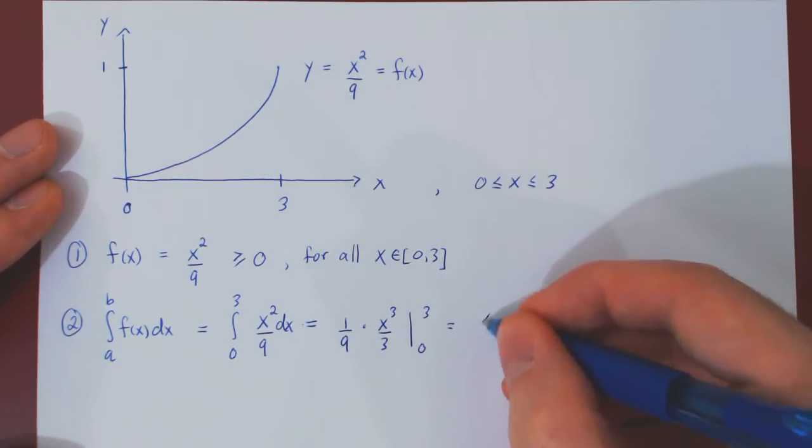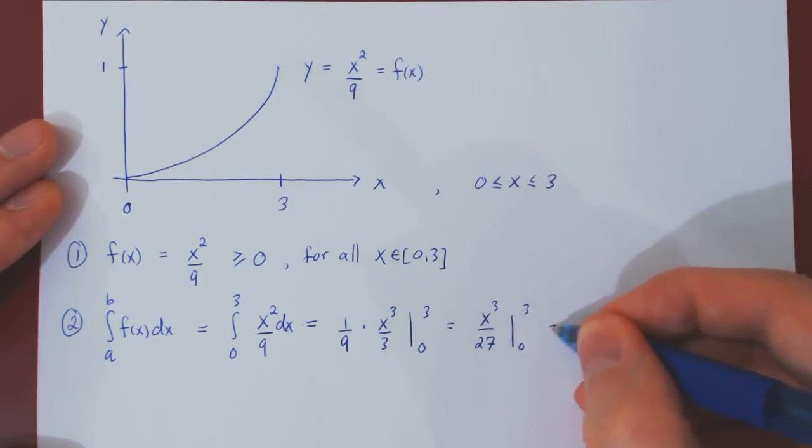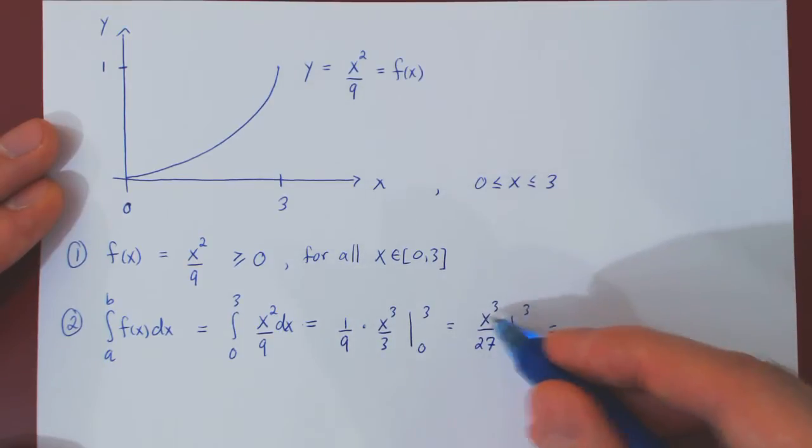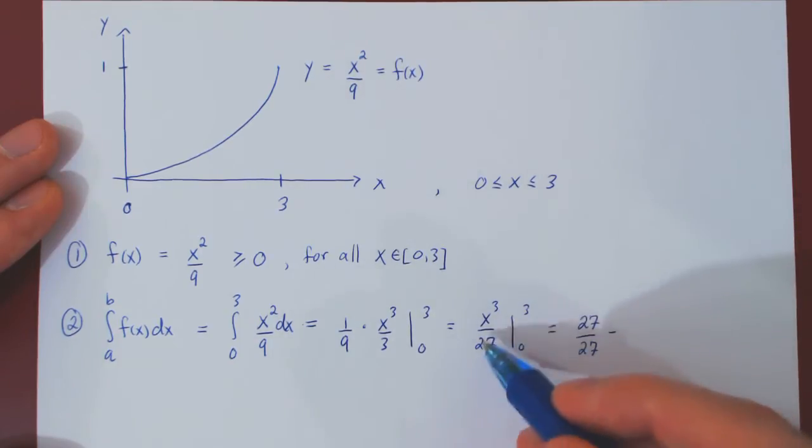We can simplify this as x cubed over 27. 3 times 9 is 27, from 0 to 3. So at 3, we get 3 cubed over 27, but 3 cubed is 27. Minus the function at 0, but 0 cubed is 0.